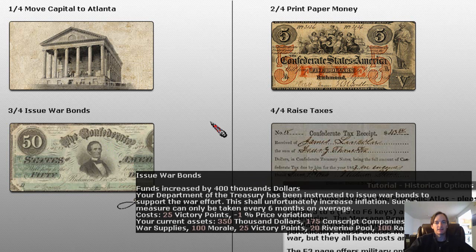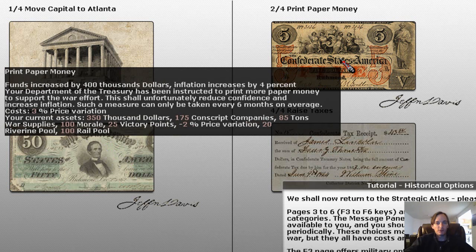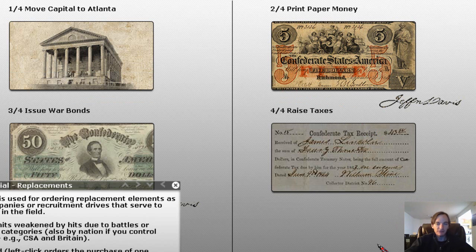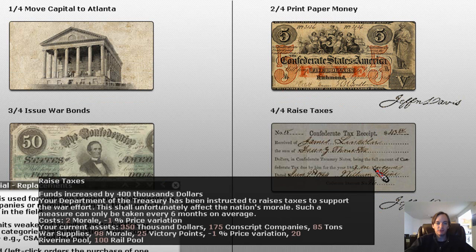If you want to issue war bonds, you just left click, and now you can see President Jefferson Davis's signature has appeared. This would give us $400,000. If you need more money, you can print money — click on that and that'll give us another $400,000, but this time the inflation is more: 3%.